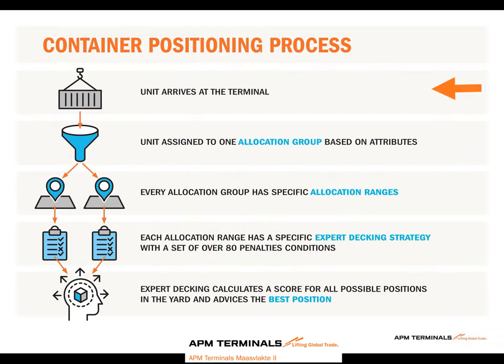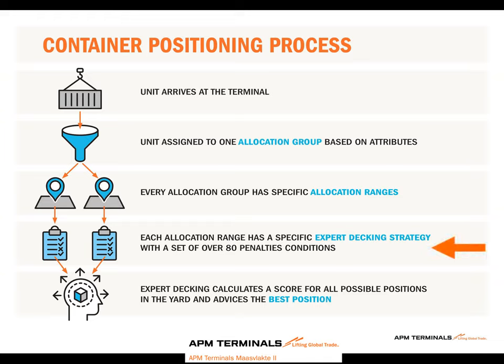Based on all these factors, a decision is made where to stack the container. The process flow is as follows: a container arrives at the terminal and based on its characteristics it is put into an allocation group. Such an allocation group has multiple allocation ranges within the yard — these are all positions where the containers of that allocation group can be stacked. Each allocation range then has a specific expert decking strategy applied. Such a strategy consists of over 80 different penalties. Expert decking then calculates a score for every single position within the yard and chooses the position with the lowest score. The container is then stacked within the yard.